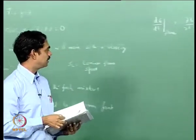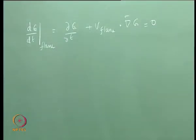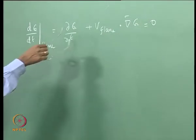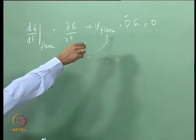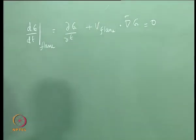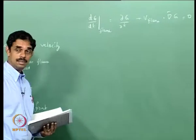We are tracking the G equal to zero surface. So D G over D t at the flame will also be zero, because we are sitting on the G equal to zero surface. This can be written as partial G by partial t plus V_flame dot del G equals zero.